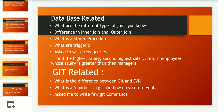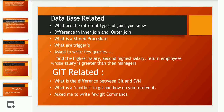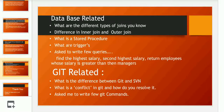The next section was database-related questions. The first question was: what are the different types of joins? I explained all the joins I know in detail. Then he asked: what is the difference between inner join and outer join? There was also a question on stored procedures — what is a stored proc — and then a question on triggers: what are triggers and have you ever implemented or coded them? The interviewer also asked me to write a few queries like finding the highest salary, the second highest salary, and returning employees whose salary is greater than their manager's.